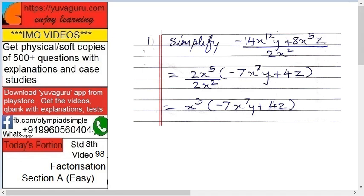Minus 7x raised to 7y—how? 7 because 14x raised to 5 into x raised to 7 is x raised to 12, and y as it is, and minus sign as it is. Plus now this 4z—how come? 2 into 4 is 8.